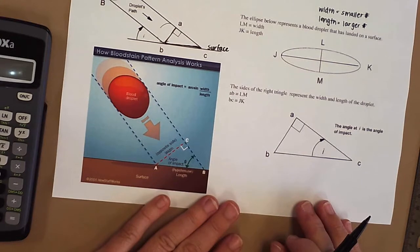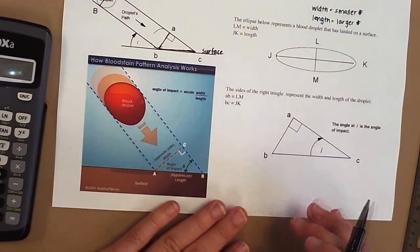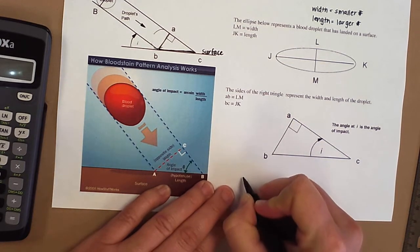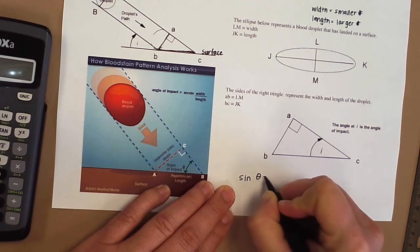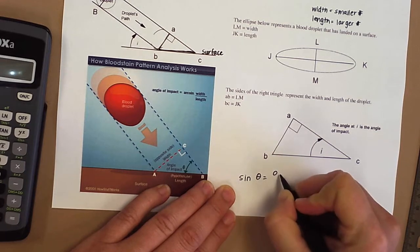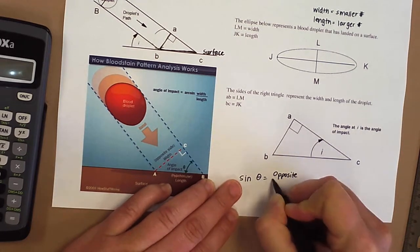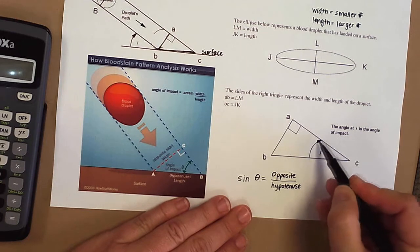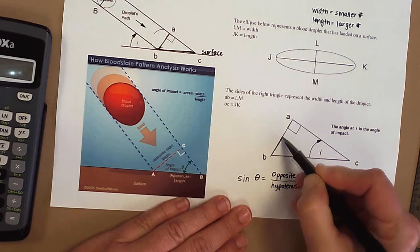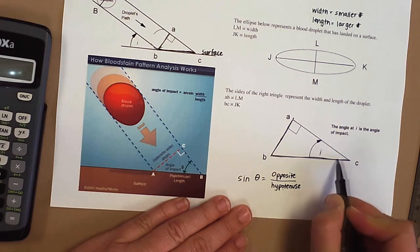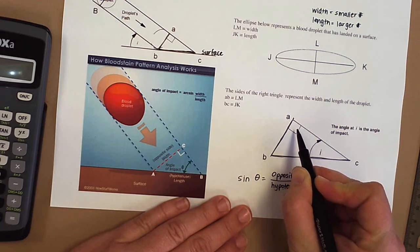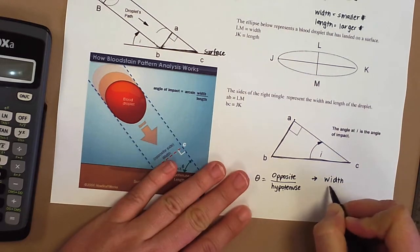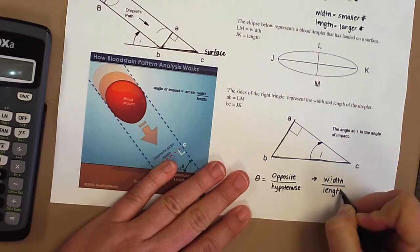Just a reminder for your trig functions that you learned in math. The one that we're going to do today is the sine function. If you remember, the sine of the angle is equal to the opposite over the hypotenuse. If we look here, this is the angle that we're looking at. So the opposite would be this measurement right here, and then the hypotenuse would be this measurement down here. Remember, hypotenuse is opposite of the right angle. The opposite is actually going to give us the width of the blood droplet, and the hypotenuse is going to be the length of the blood droplet.